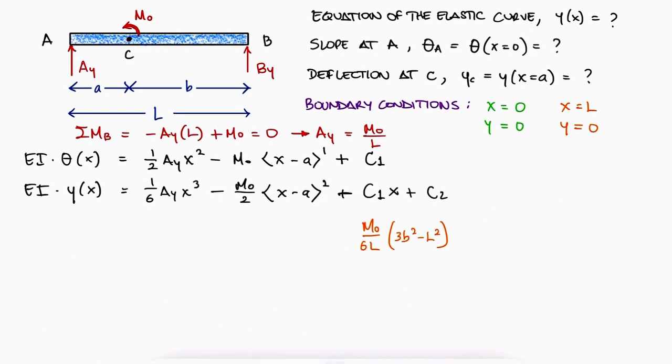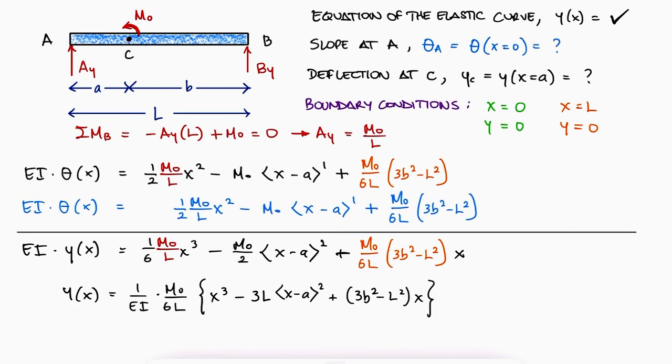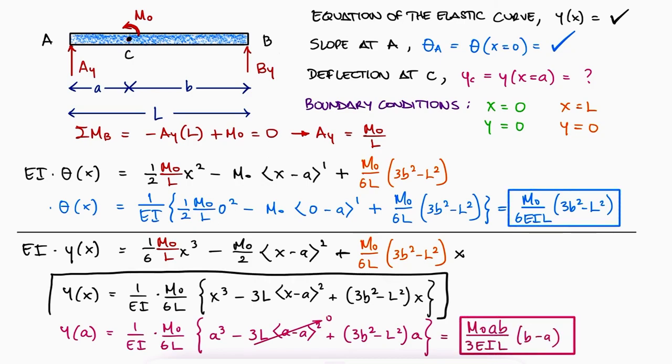With C1 in terms of the given variables, knowing that C2 is 0 and substituting Ay, we find the equation of the elastic curve. The slope at A will be the first equation evaluated at x equal to 0, and the deflection at C will be y of x evaluated at A.